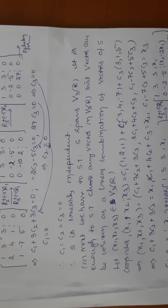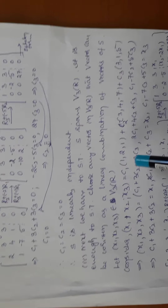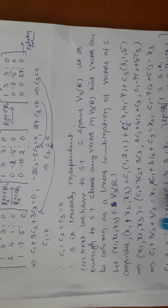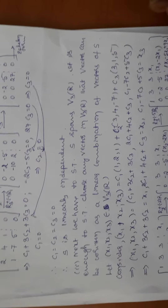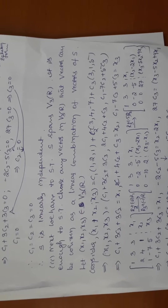Next, verify that S spans V3(R). It is enough to show that any vector (x1, x2, x3) in V3(R) can be expressed as a linear combination of the vectors in S. Assume x1, x2, x3 = c1·(1,2,1) + c2·(3,4,-7) + c3·(3,1,2). I need to find c1, c2, c3 in terms of x1, x2, x3. Multiplying out and equating corresponding components gives a system with right-hand side x1, x2, x3.